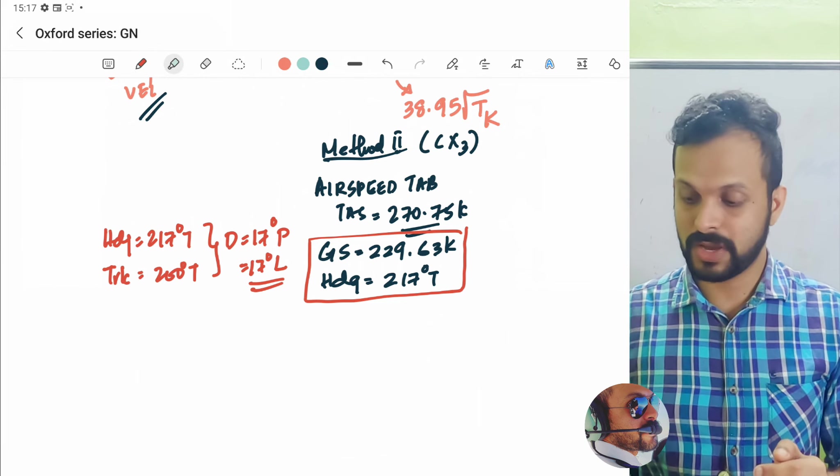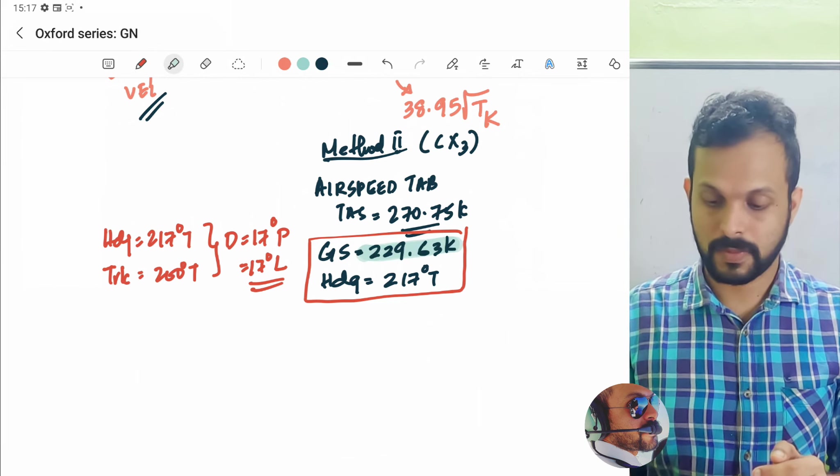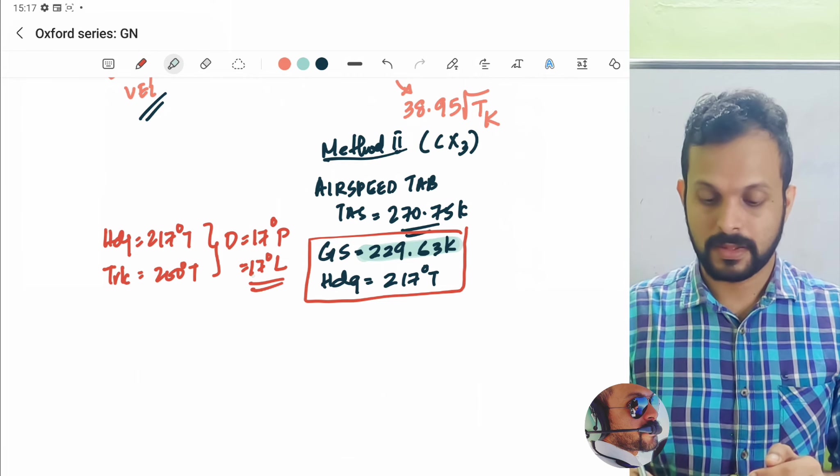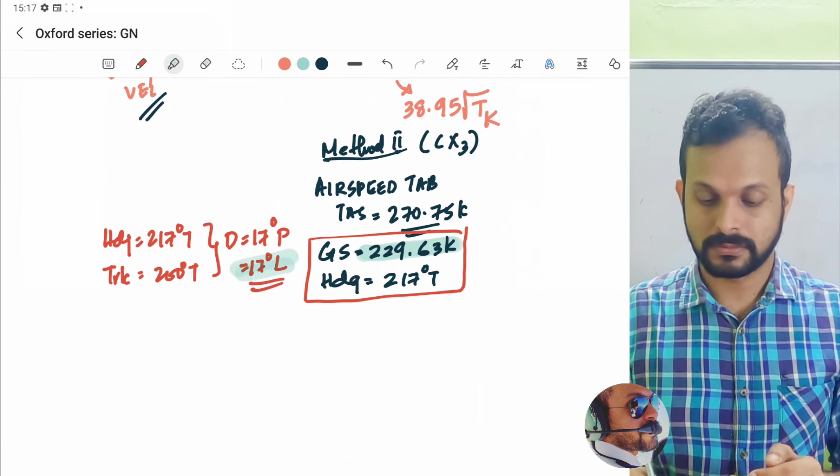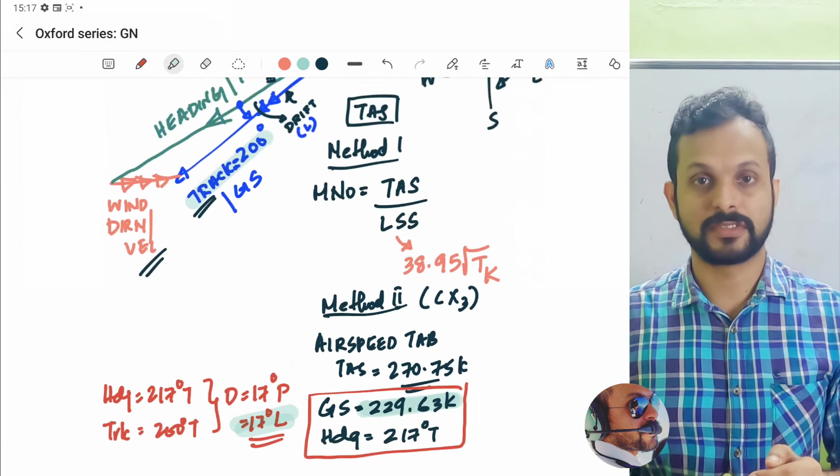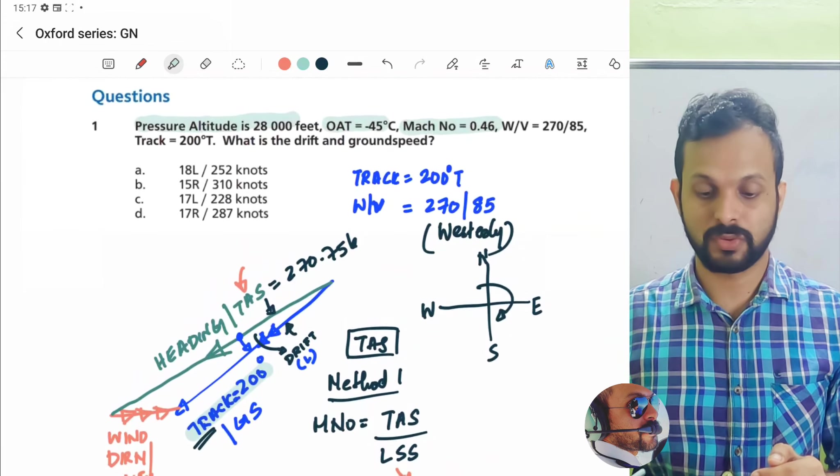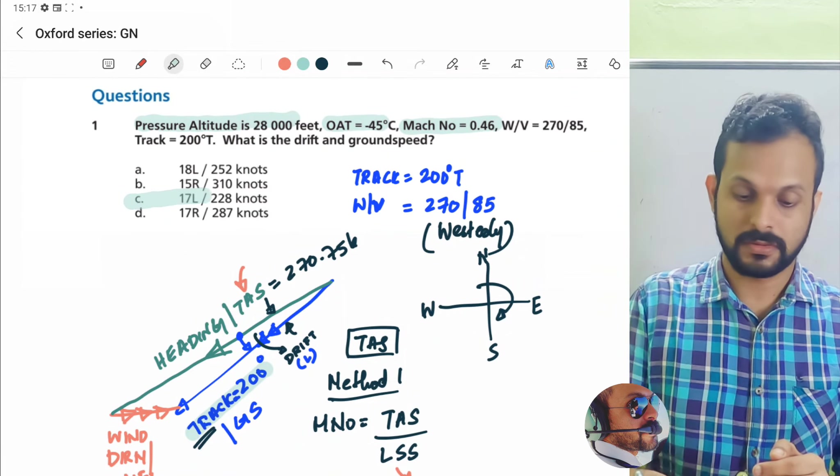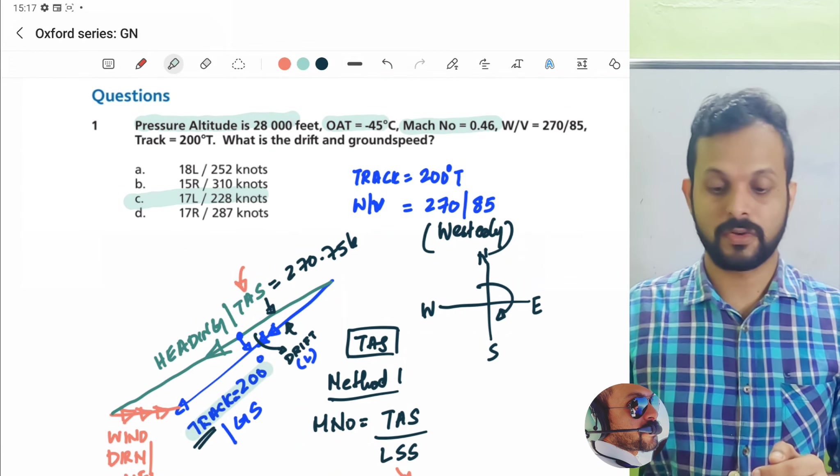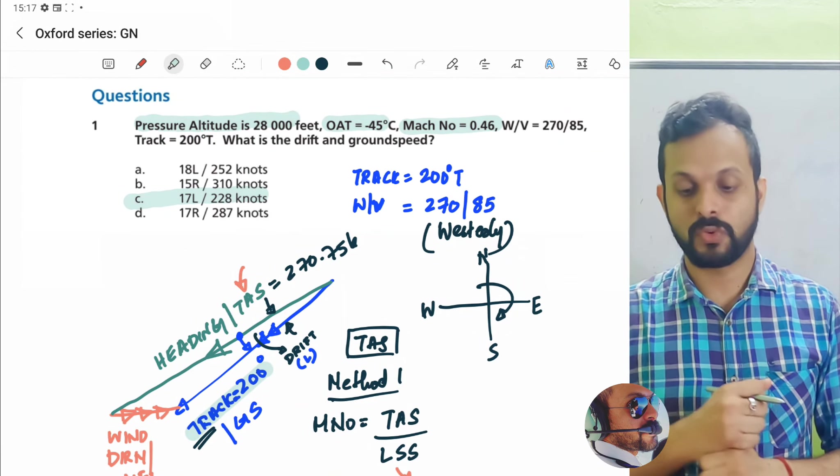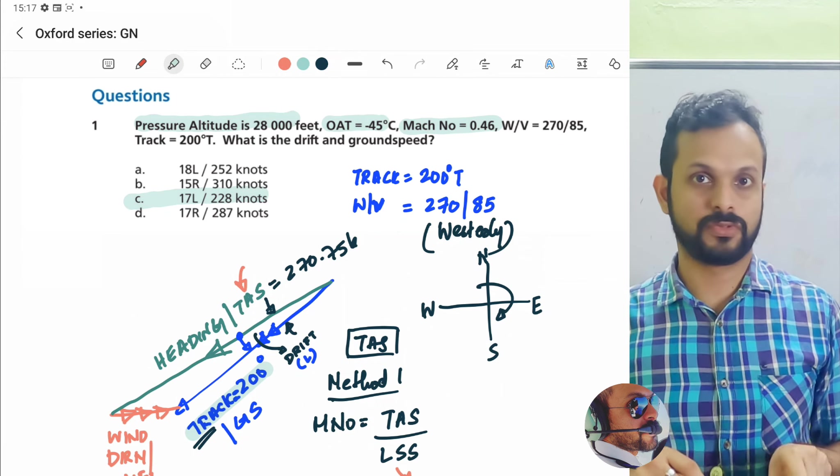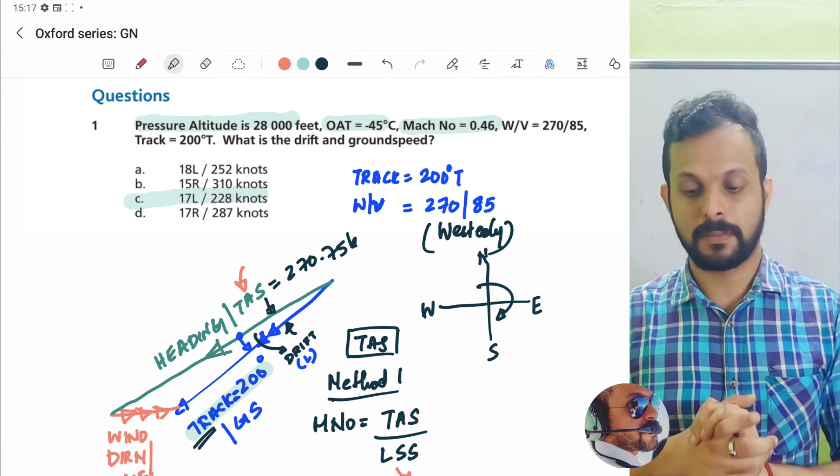So the question is asking for ground speed and drift. So ground speed is 229 and the drift is 17 degrees left. So that brings us to the option Charlie as the right answer. 17 degrees left and 228 knots. All right. I hope this question made sense to you.